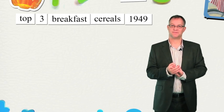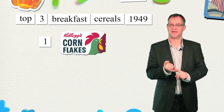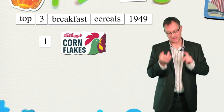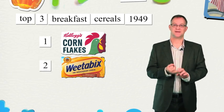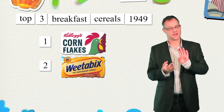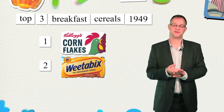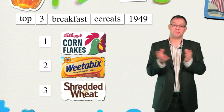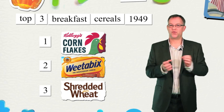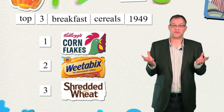Ready? Correct. Number one, Kellogg's Corn Flakes. Number two was Weetabix. And number three, no, not Rice Krispies. Number three was actually shredded wheat. But the point is, all three of those brands are still household names today.